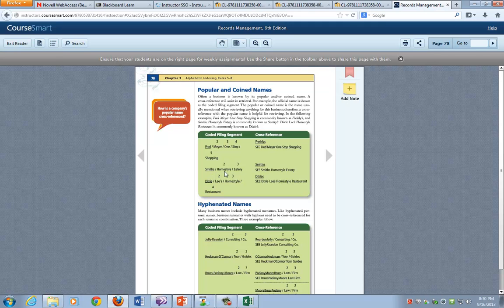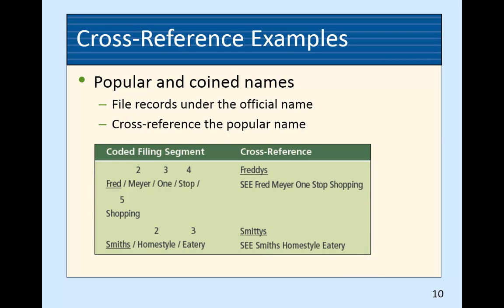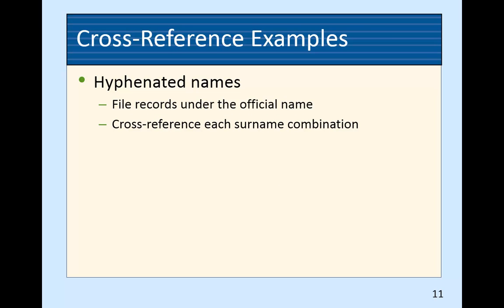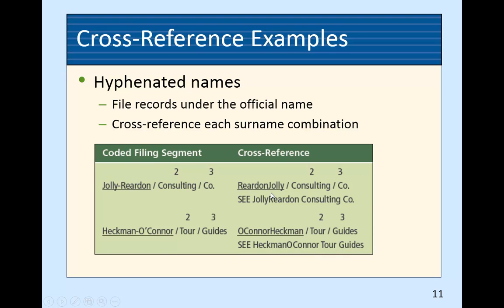Smitty's — it's actually Smith's Homestyle Eatery, so that's where the file is. For hyphenated names, same thing — file under the official name and cross-reference each surname in the combination. Jolly Reardon Consulting needs a cross-reference for Reardon Jolly. Heckman O'Connor Tour Guides needs a cross-reference so if somebody looks up O'Connor Tour Guides, they can find it and see that it's actually filed under Heckman.